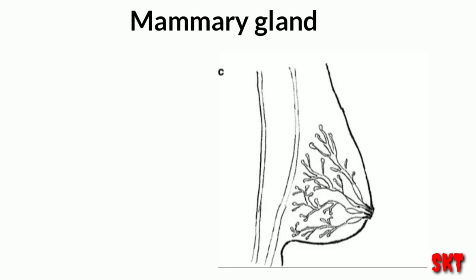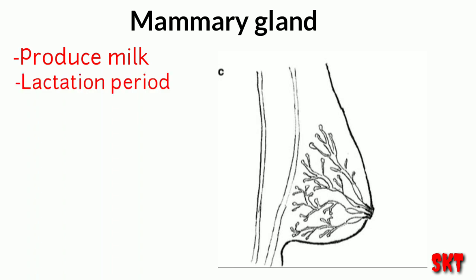The last one is the mammary glands, which produce milk that nourishes the young ones. The period during which the mammary glands produce milk is called the lactation period. Mammary glands are present in all mammalian species.